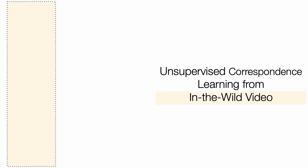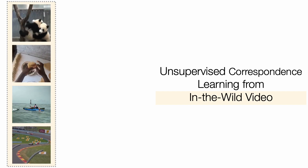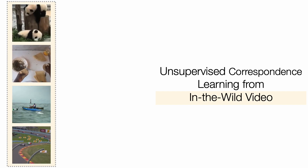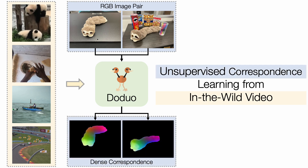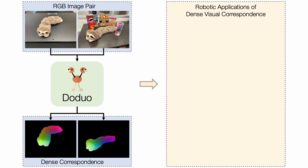To encompass this limitation, we employ unsupervised correspondence learning from in-the-wild videos. These videos naturally contain non-rigid changes across different frames. From these videos, we learn a generic correspondence model, Doodle, which takes as input a pair of RGB images and outputs the dense correspondence between the images. This generic correspondence model facilitates various robotic applications.